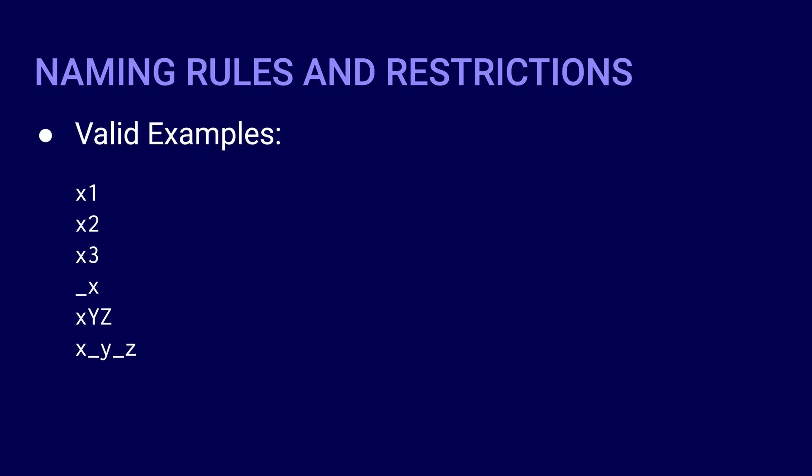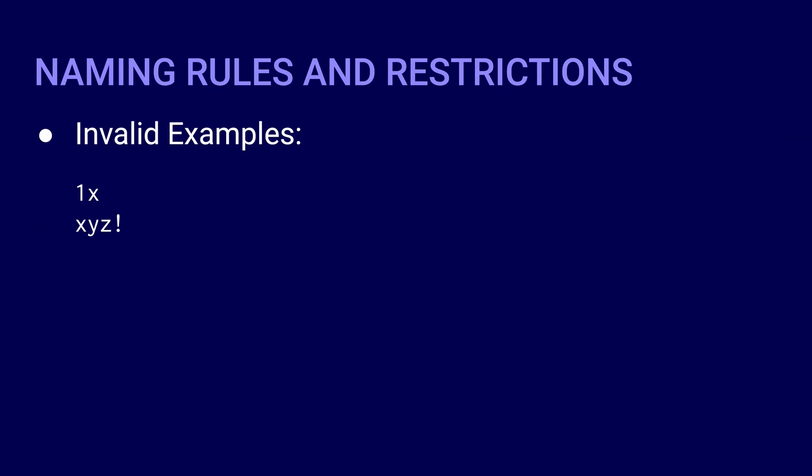Here are some examples of valid variable names: x1, x2, x3, _x, x, y, z, x_y, _z. And here are some examples of invalid variable names: 1x and xyz!. 1x is invalid because variable names are not allowed to start with a digit — they can contain digits as long as it is not the first character. xyz! is invalid because exclamation points are not allowed in variable names. All special characters, except for the underscore, are not allowed in Python. In other programming languages, other special characters are also allowed — in Java, for example, the dollar sign is allowed.